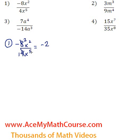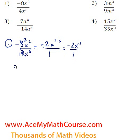Now x squared over x to the power of 5. What we can do is subtract the exponents because we're dividing. So if you're dividing items with the same base, you can just subtract the exponents. So 2 minus 5, all over 1 for now. So we're going to have negative 2x to the power of 2 minus 5, which is negative 3. But I don't want a negative exponent, so I'll make it positive by sending the x down to the denominator. So we have negative 2 over x cubed — these are perfectly equivalent.